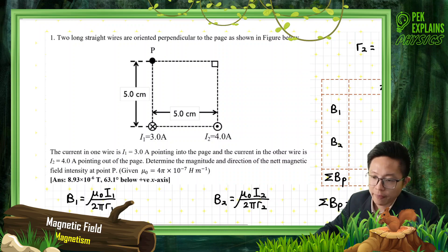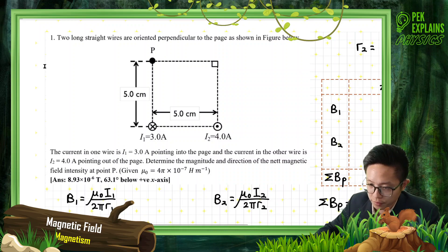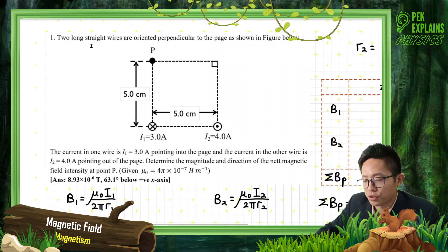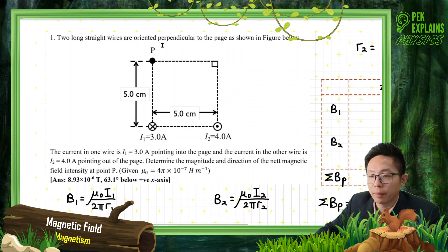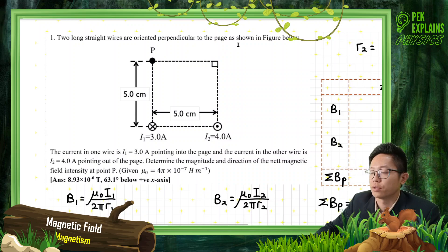Good morning. The first question is on magnetic field. Two long straight wires are oriented perpendicular to the page as shown in the figure below.